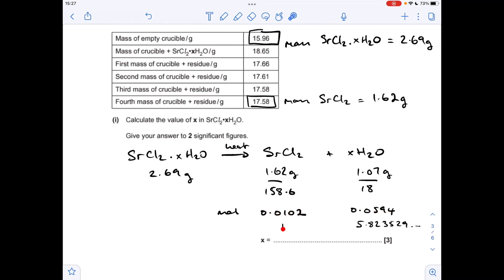That's giving me a ratio of 1 to 5.823529 dot dot dot, so I'm not putting the full calculator value in.